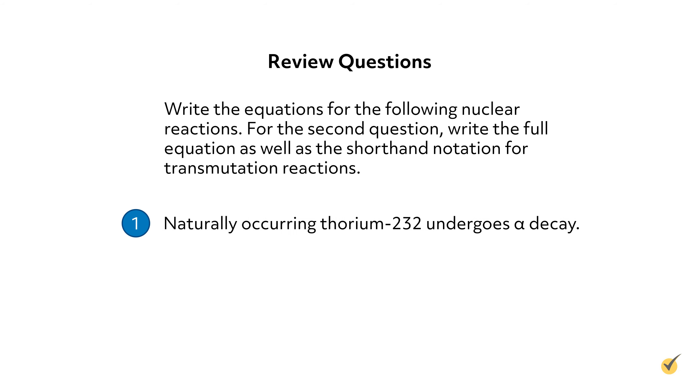These practice questions will require a periodic table. Pause the video and write the equations for the following nuclear reactions. For the second question, write the full equation as well as the shorthand notation for transmutation reactions. Number one: naturally occurring thorium-232 undergoes alpha decay. Number two: when aluminum foil was bombarded with alpha particles, phosphorus-30 and neutrons were formed.